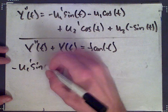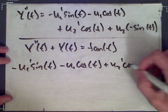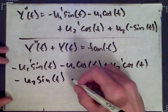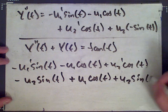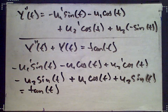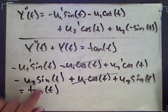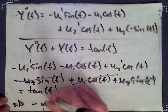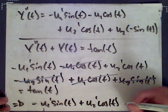We get negative u1 prime sin t minus u1 cos t plus u2 prime cos t minus u2 sin t, plus y which is plus u1 cos t plus u2 sin t, and that should equal tan t. Some terms cancel: u1 cos t cancels, and u2 sin t cancels. So what we get is negative u1 prime sin t plus u2 prime cos t equals tan t.